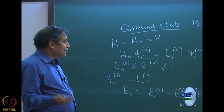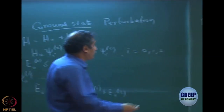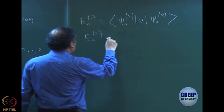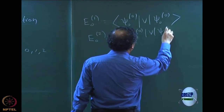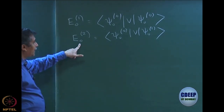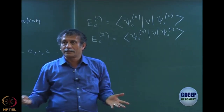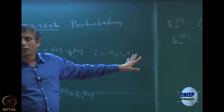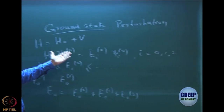In the last class, we also wrote down the equation for the second order and found that E02 equals ψ00 V ψ01. However, we cannot yet calculate the second order correction because we need to know ψ01. So far we have not been told how to calculate the wave function corrections. ψ01 is something we have to evaluate; ψ00 is known but ψ01 is not known.